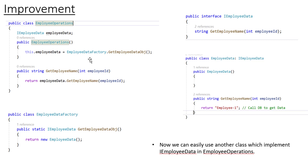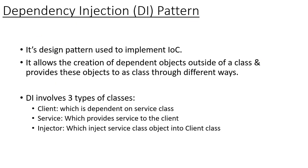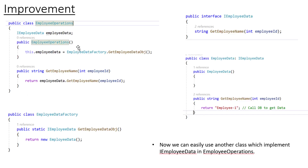We are still creating an object inside the class, and that's where the DI pattern comes in. It says that the creation of dependent objects should happen outside of a class, and these objects should be provided to the class through different ways. So rather than creating the object inside EmployeeOperation, why not inject the object from outside of the class?